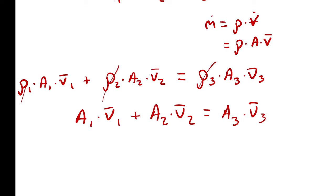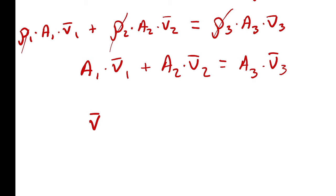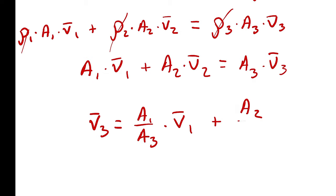There is no such thing as the law of conservation of volumetric flow rate, despite the fact that we're saying volumetric flow rate at 1 plus volumetric flow rate at 2 equals volumetric flow rate at state 3. Anyway, I'm looking for average velocity at state 3, so I'll write this as: V̄₃ = (A₁/A₃)·V̄₁ + (A₂/A₃)·V̄₂.